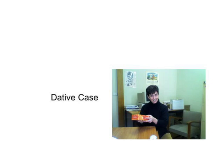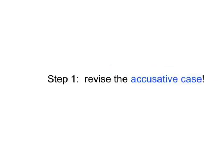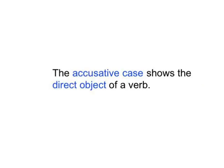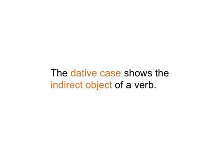Do you remember how the accusative case works? If not, have a look back over it, because the grammar of the dative case is very similar. They're a bit like non-identical twins. The accusative case is used to identify the direct object of a verb. The dative case is used to point out the indirect object. What does that mean?